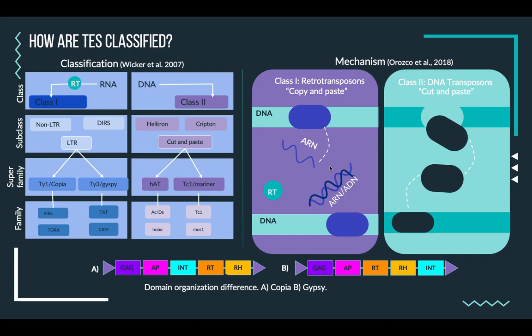There are different elements and they are commonly classified into families according to the Wicker system. So we have two main classes: the first is known as retrotransposons or copy-and-paste, and the second class is DNA transposons or cut-and-paste.